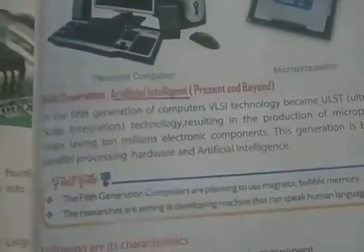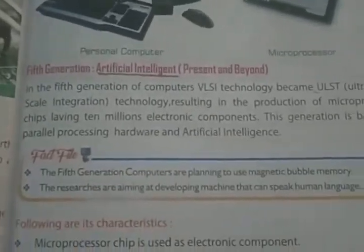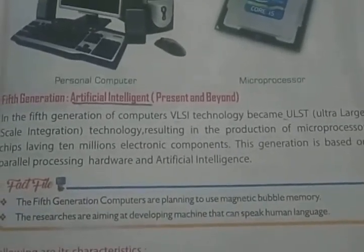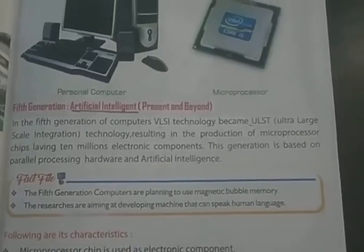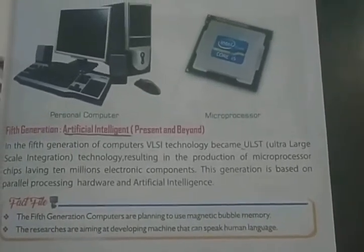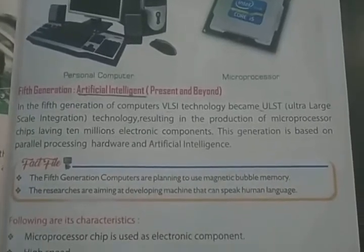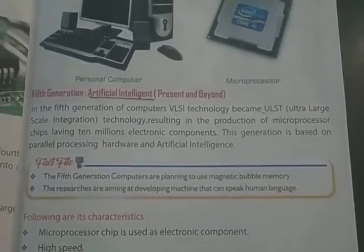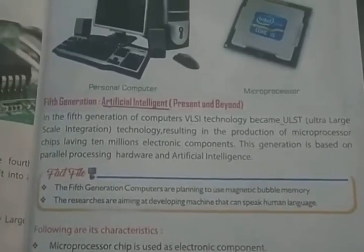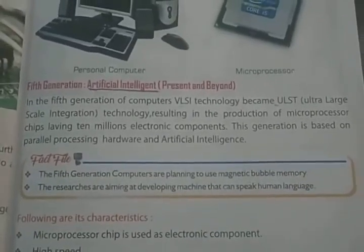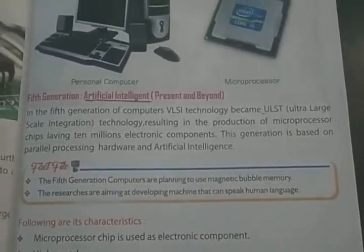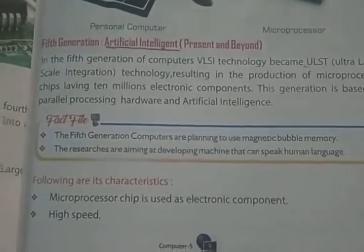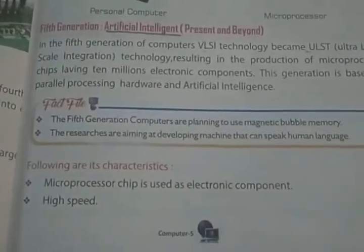Fifth generation computers are based on artificial intelligence and are currently in use. VLSI technology advanced to ULSI — Ultra Large Scale Integration — resulting in the production of microprocessor chips having 10 million electronic components. This generation is based on parallel processing hardware and artificial intelligence.